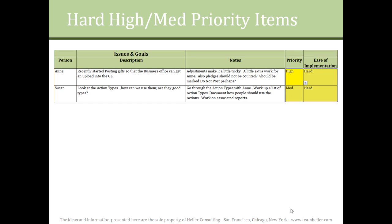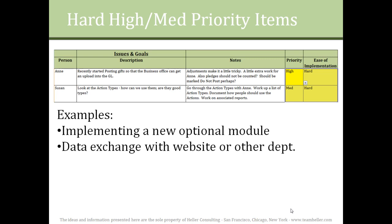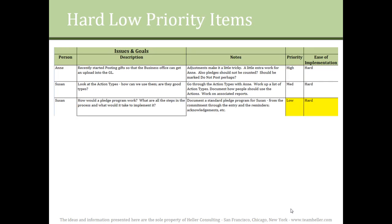Some examples of hard high-priority items might be developing training materials for new users, figuring out a moves management system, or restructuring your fund codes. The hard low-priority items can probably be put on hold or addressed slowly during slow times, or perhaps with volunteer or intern help.